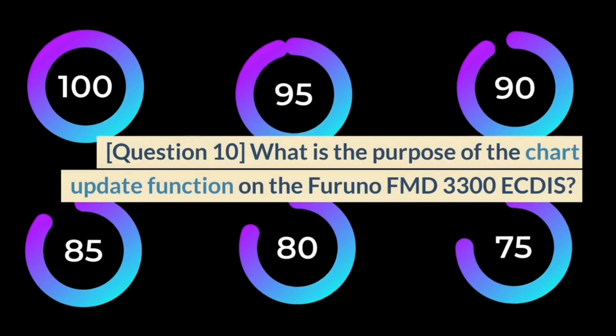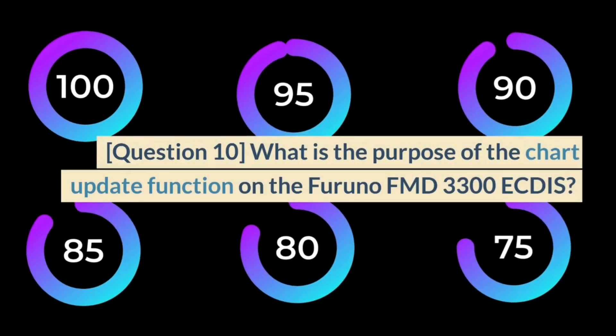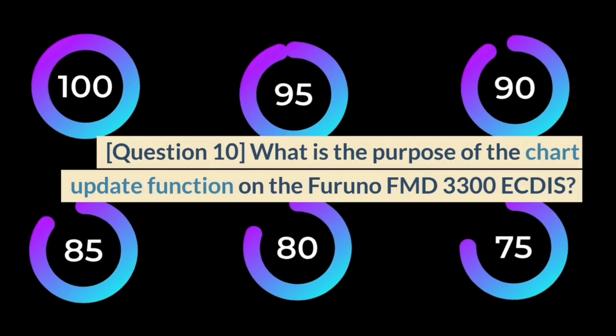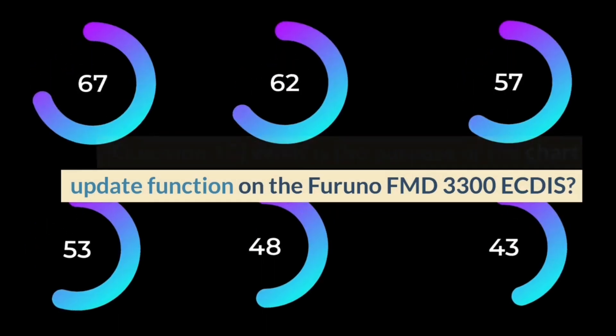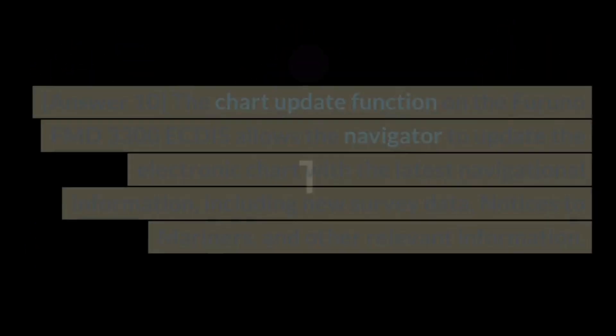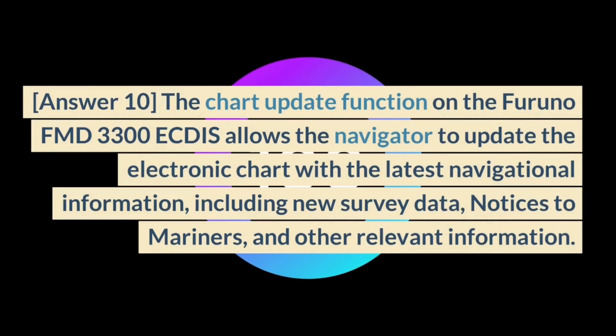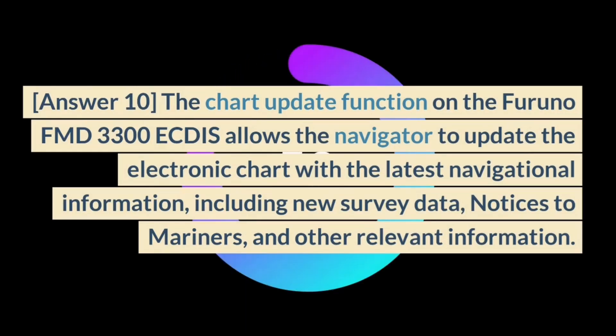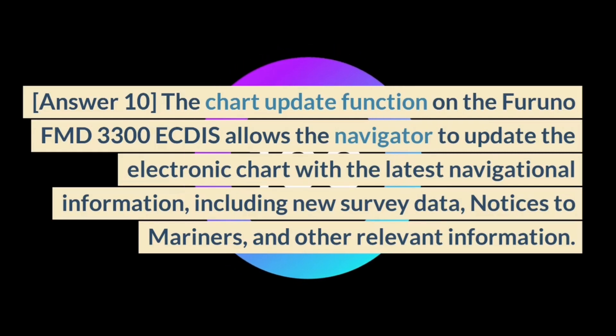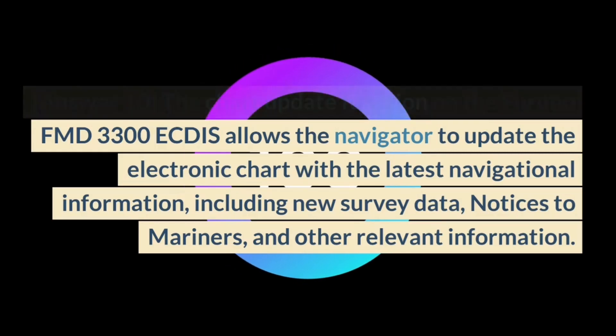Question 10. What is the purpose of the chart update function on the Furuno FMD 3300 ECDIS? Answer 10. The chart update function allows the navigator to update the electronic chart with the latest navigational information, including new survey data, notices to mariners, and other relevant information.